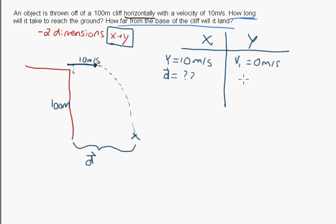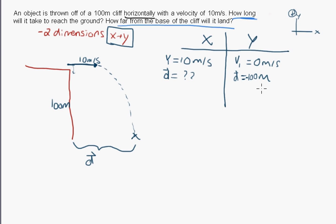So the initial velocity in y is 0 m/s, and the displacement is negative 100 meters. We define up as positive, so anything going down is negative. The displacement is therefore negative 100 meters, and acceleration due to gravity is negative 9.81 meters per second squared.